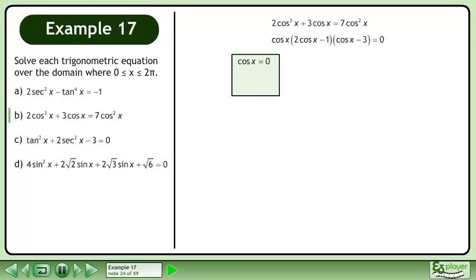Solve cosx equals 0. The solution is x equals π/2 and 3π/2.